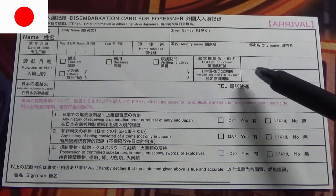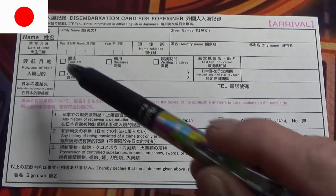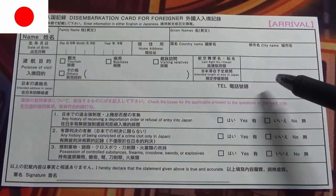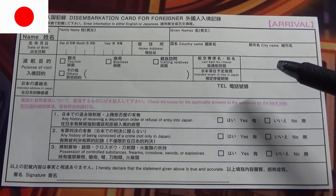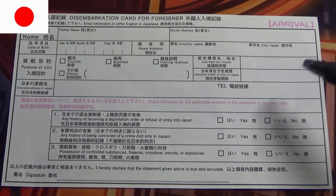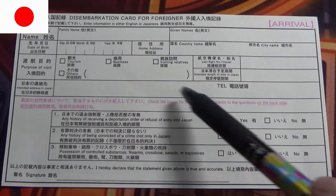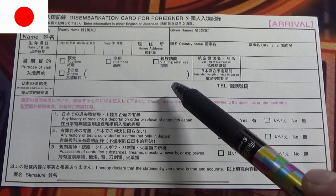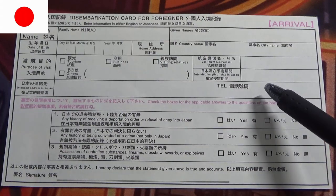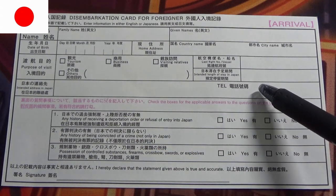Then, intended length of stay in Japan — how long are you planning to stay? If you're coming as a tourist, you would write maybe one week or one month. I think most people can get a three-month stay. Next is the intended address in Japan. If you're staying at a hotel, write the name of the hotel and the address and the number. If you're staying at your friend's place, you would write their address and their telephone number here.